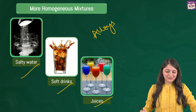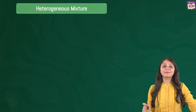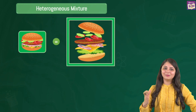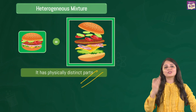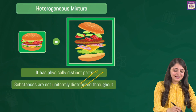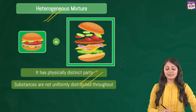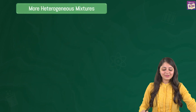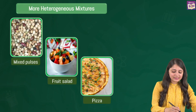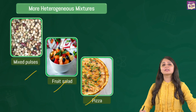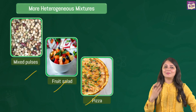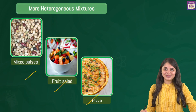Now coming to the next important type — heterogeneous mixture. In this case there is no uniform composition. You can see the burger and figure that out — clearly there are visible boundaries of separation between the components, meaning it has physically distinct parts. This is a heterogeneous mixture where substances are not uniformly distributed. Examples include mixed pulses, fruit salad, pizza, oil and water (which forms two separate layers), and sand and water.